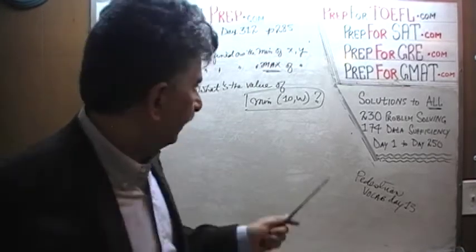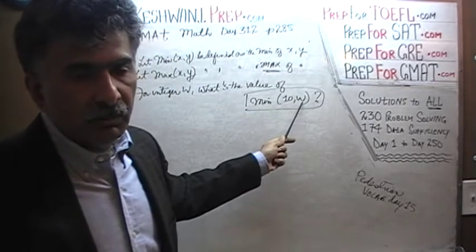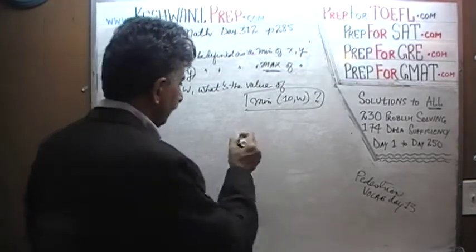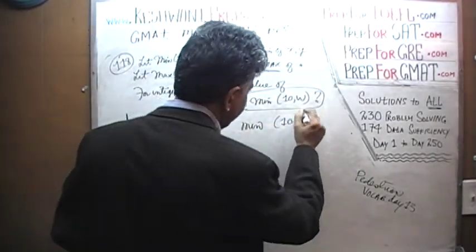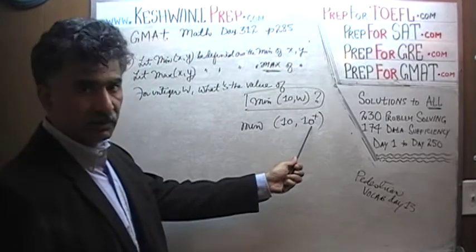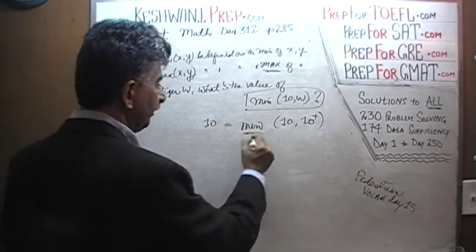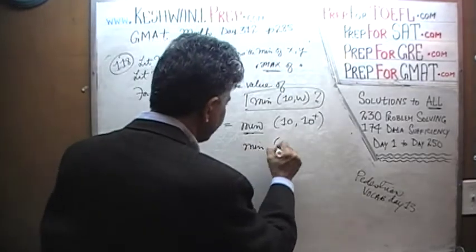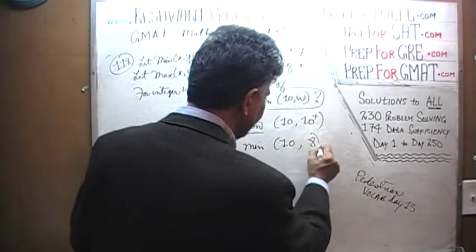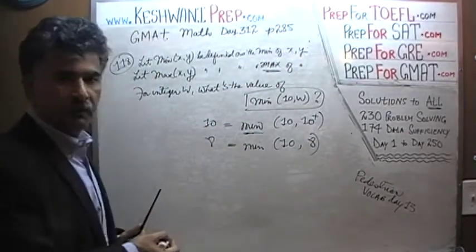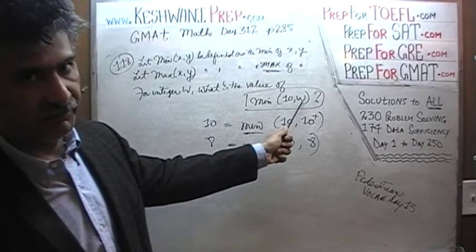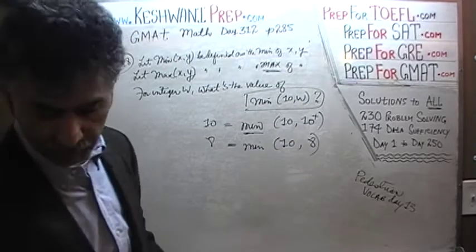The only data we require is to establish whether w is less than 10 or more than 10. If w is more than 10, then the minimum of 10 and something more than 10 would be 10. If w is something less than 10, say 8, then the minimum would be 8. So we simply have to establish whether w is more than 10 or less than 10.